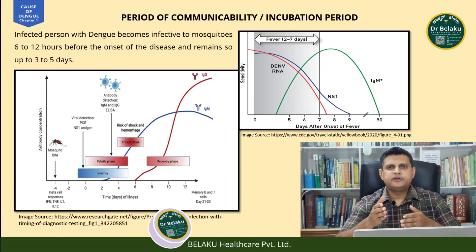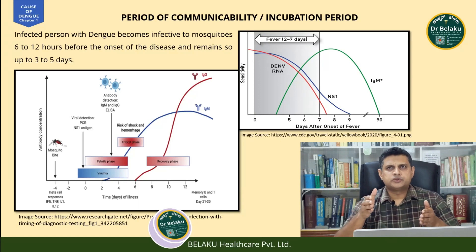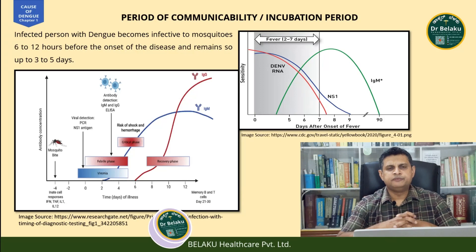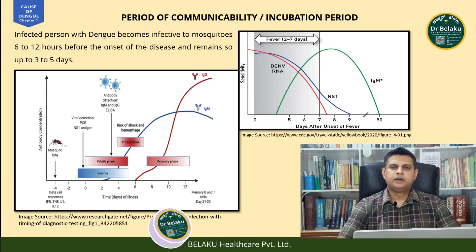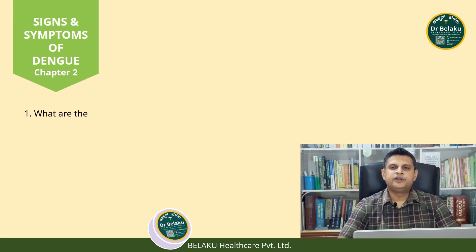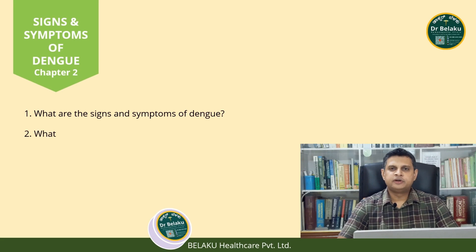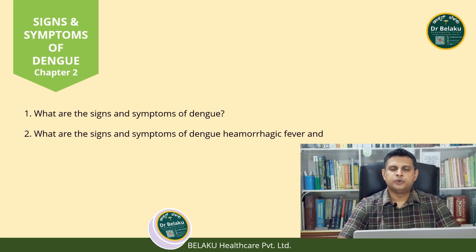After the critical phase comes the recovery phase. For about 90 days or so, if we test the blood of a person, we can still detect IgG and IgM present in them — basically indicating that they have developed antibodies to this infection. This brings us to chapter 2, where you will understand the signs and symptoms of dengue fever, dengue hemorrhagic fever and shock syndrome, and the course of the illness.